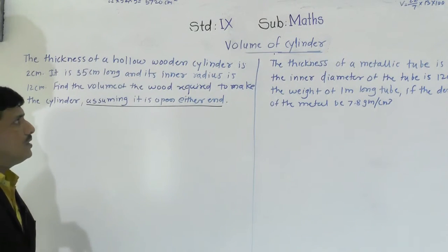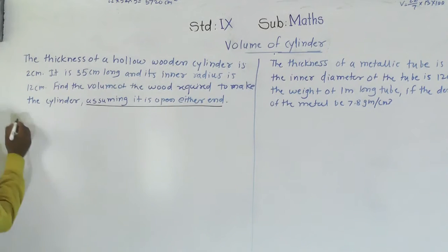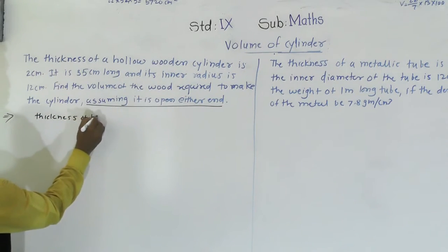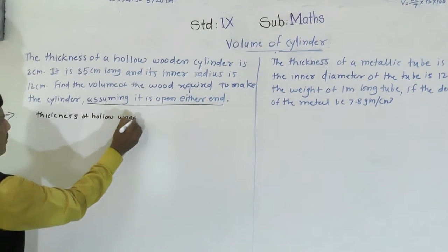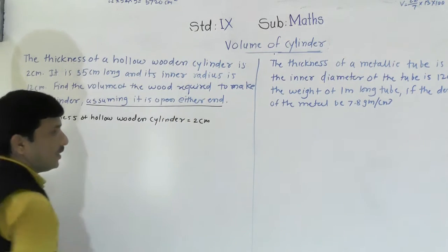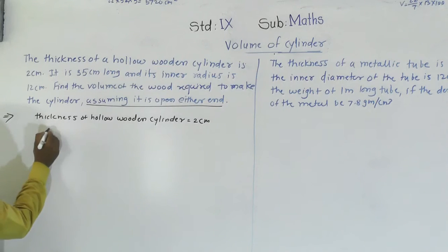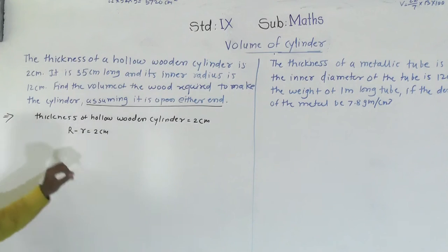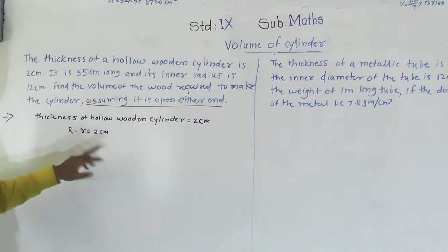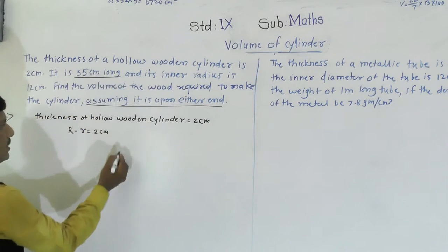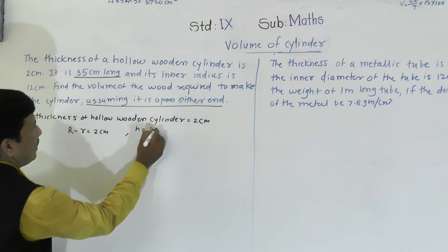The thickness of the hollow wooden cylinder is 2 cm. Thickness means the external radius minus the inner radius, which we denote as capital R minus small r equals 2 cm. It is 35 cm long — that is the height of the cylinder, h = 35 cm.